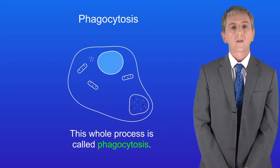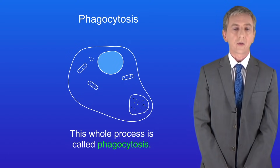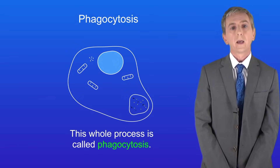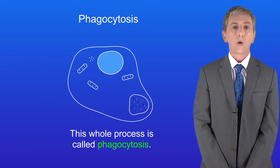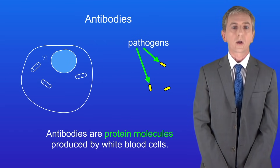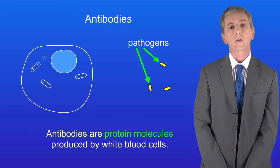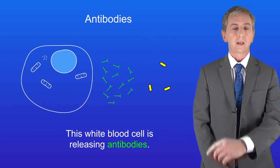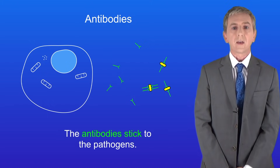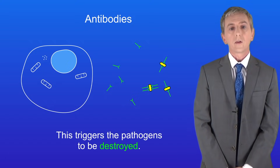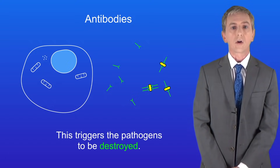The second way that white blood cells can destroy pathogens is by making antibodies. Antibodies are protein molecules produced by white blood cells. As you can see, the antibodies stick to the pathogens. This triggers the pathogens to be destroyed.